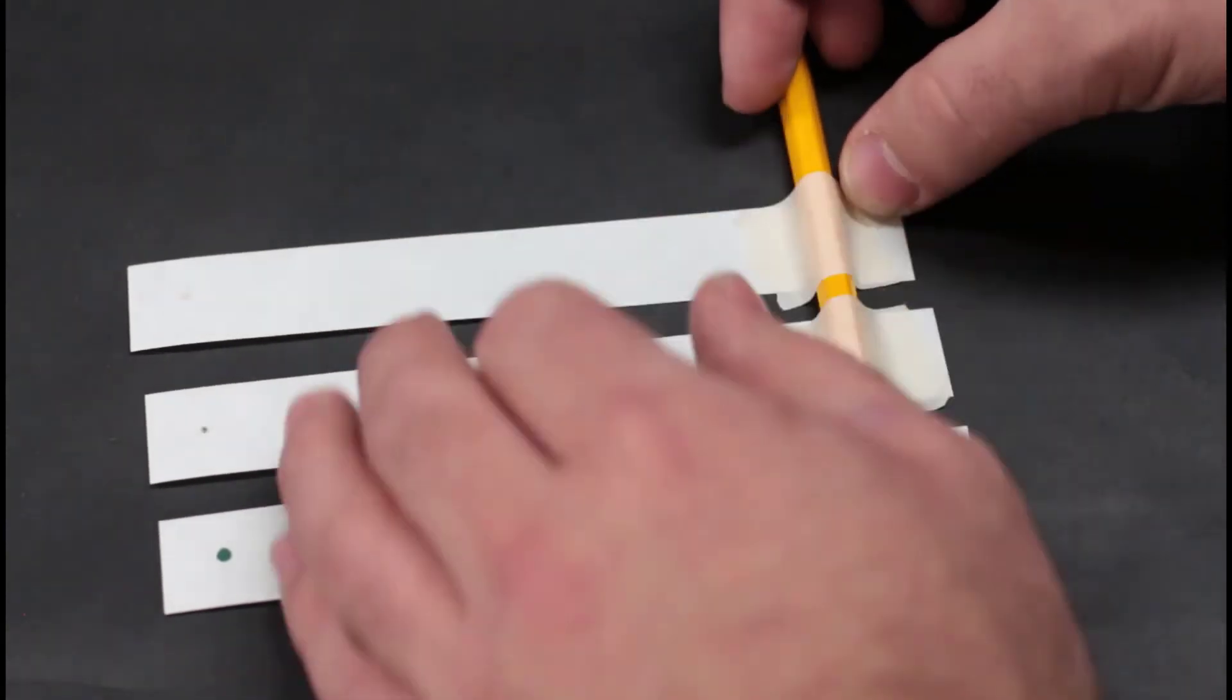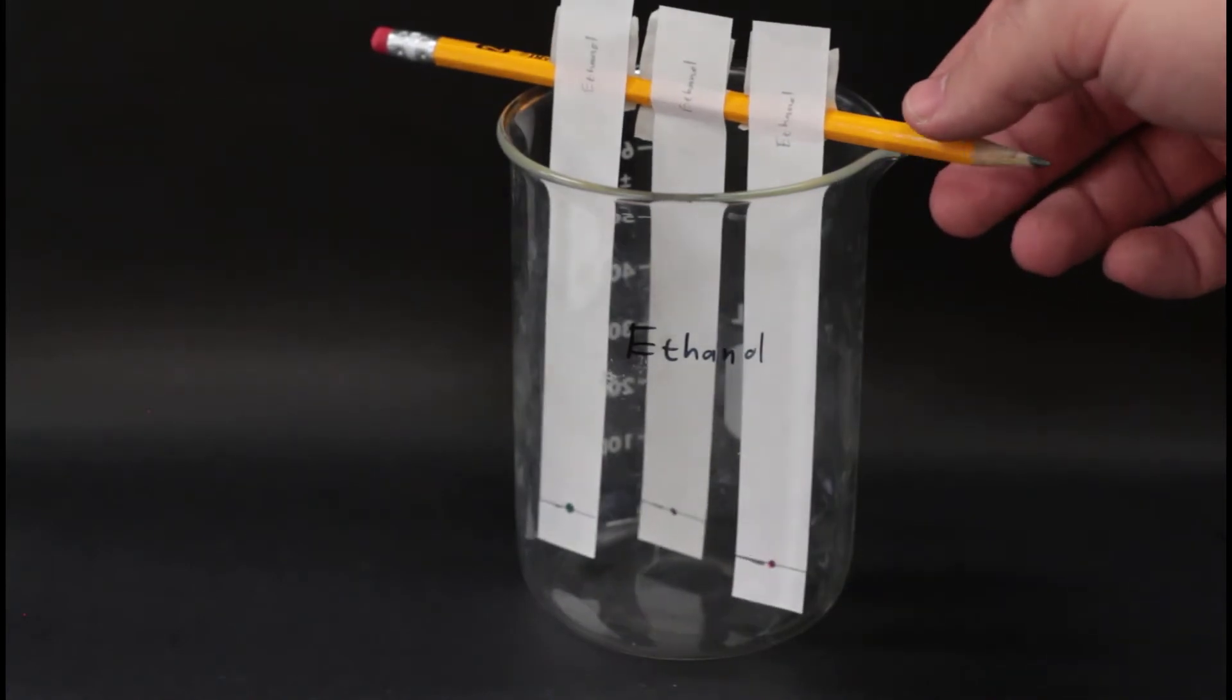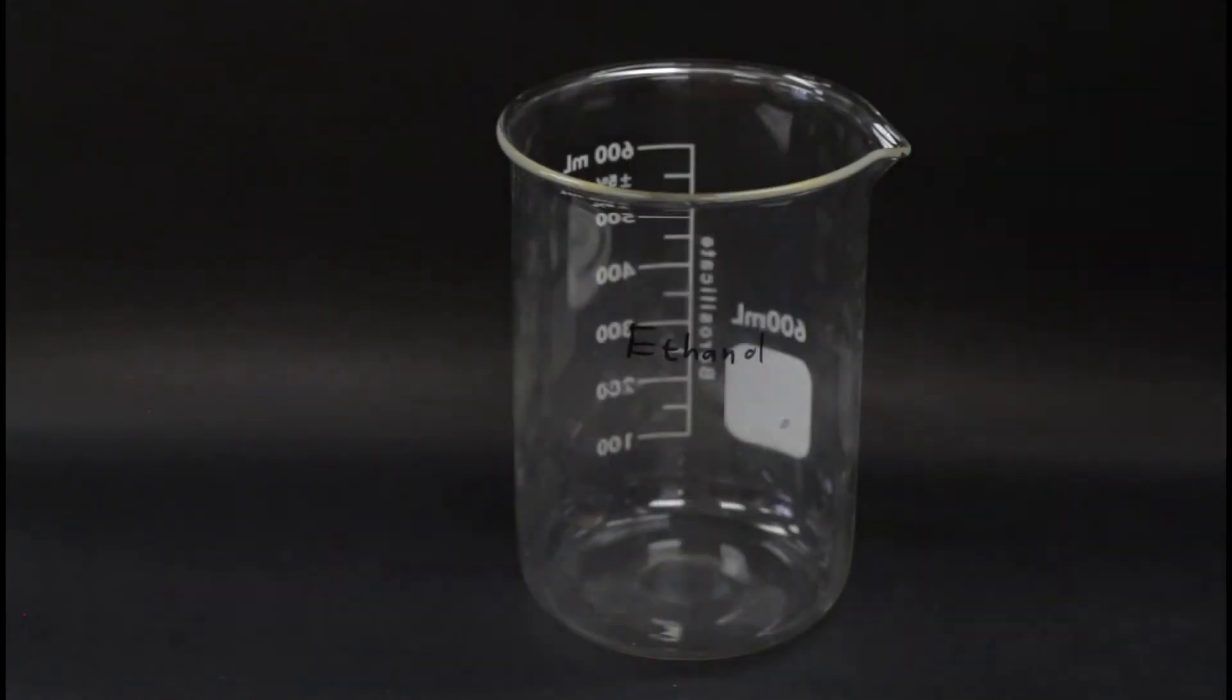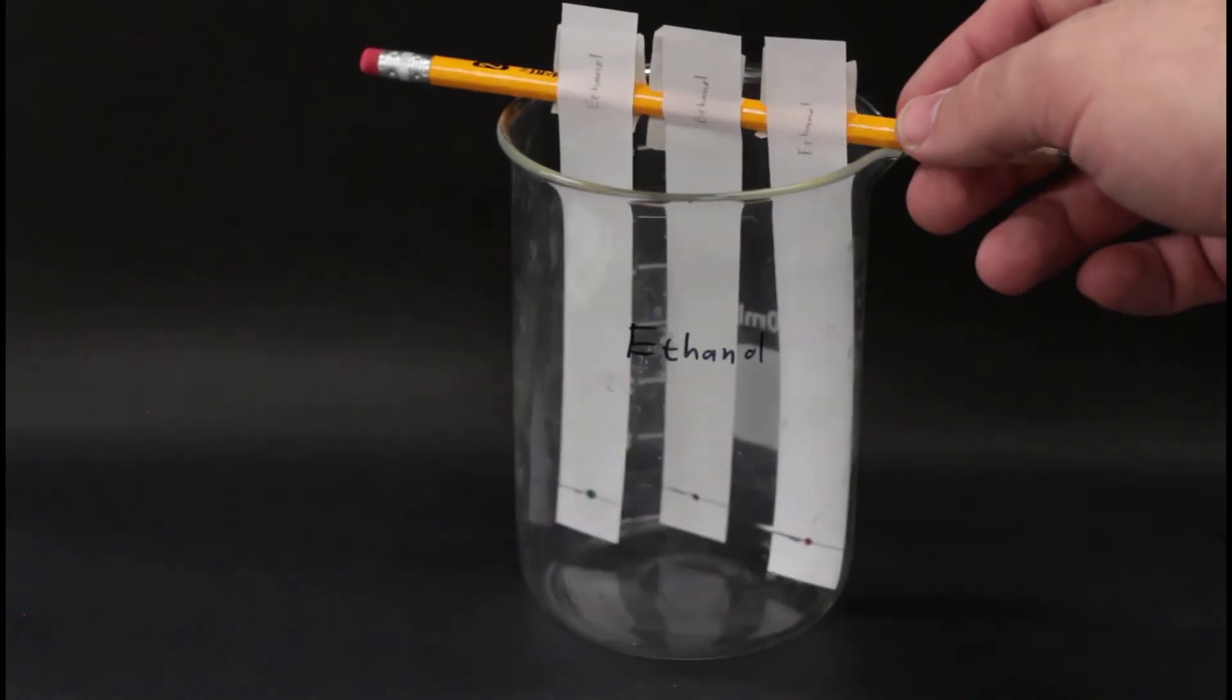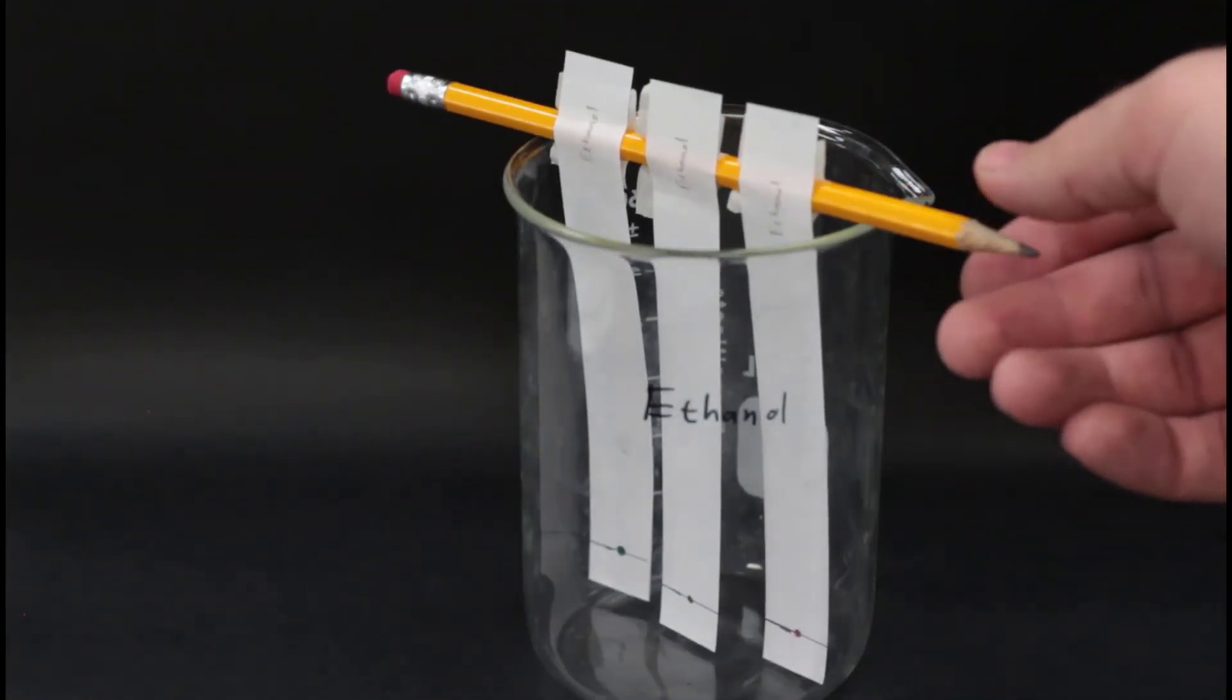Next, tape the paper to the pencil and make sure it's at the proper height. Again, the paper should be just above the bottom of the beaker or barely touching the bottom. You may have to adjust your paper and your tape a few times to get it exactly right.